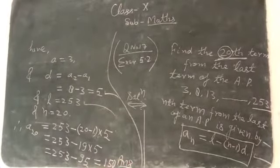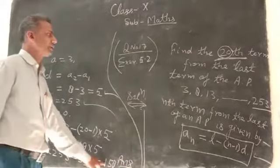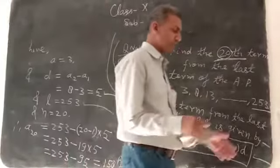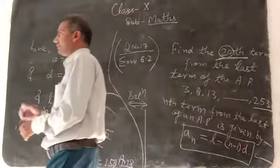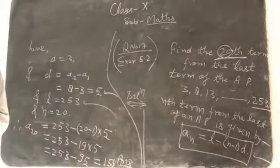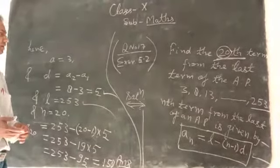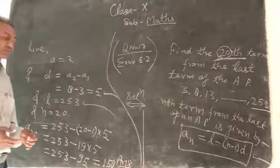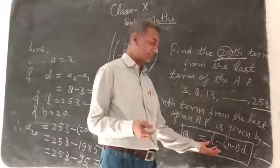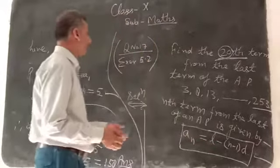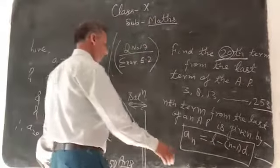So wherever we know the formula and also we know the terms which are used in formula, then the process is simple. So if we know the formula, the formula applies, that's the required answer. Clear?